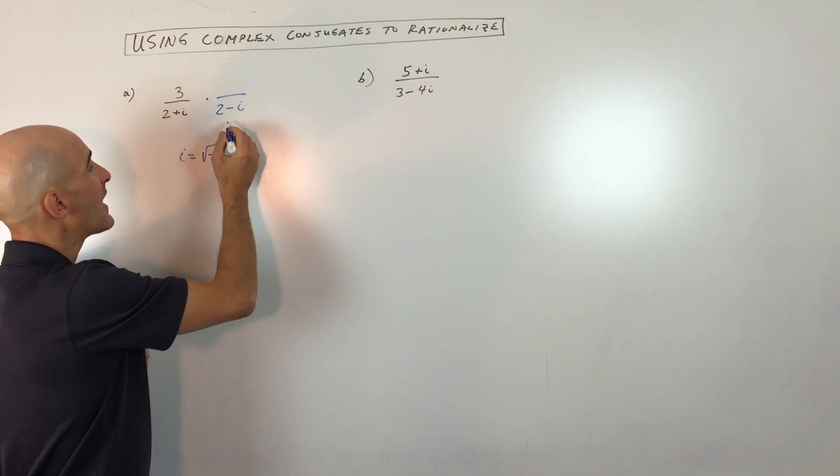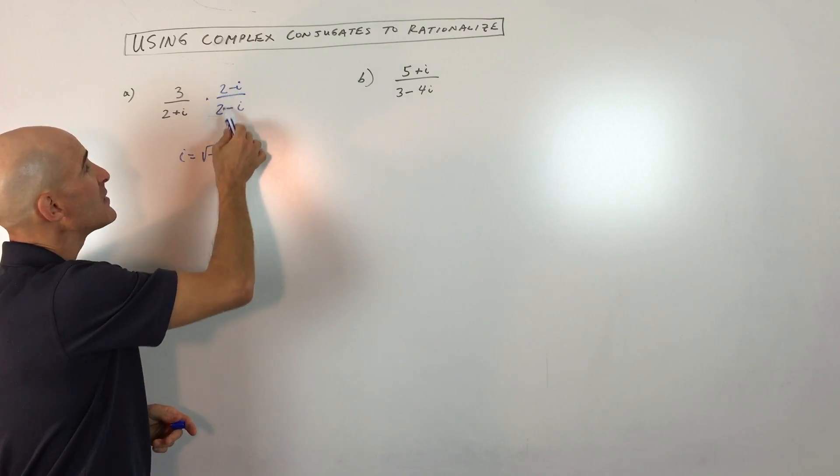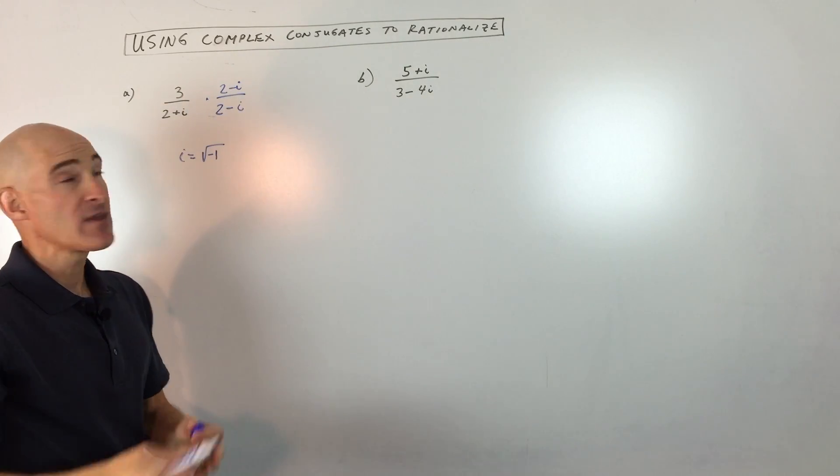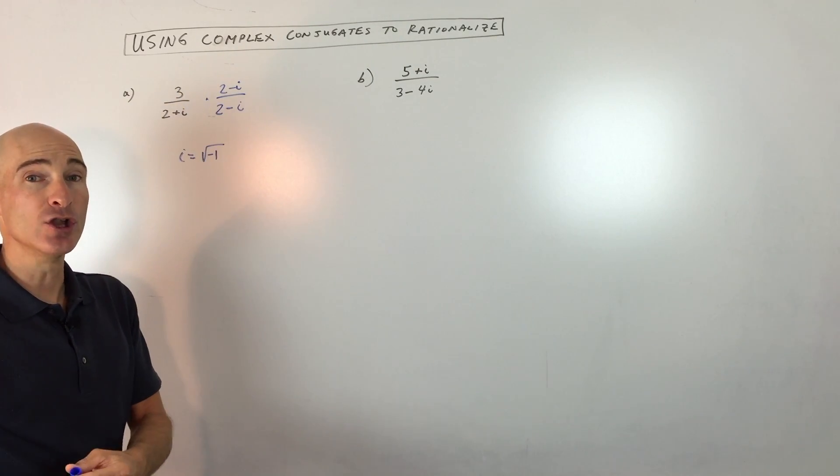And then whatever you do to the denominator, you want to do also to the numerator, because anything divided by itself is one. And when you multiply this whole fraction by one, it doesn't change the value of the fraction. It just changes the way that it looks.